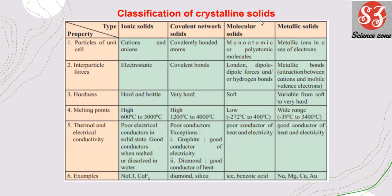Next is the classification of crystalline solids. Solids are of two types: crystalline and amorphous. The crystalline solids are classified into four types: first is ionic solid, second is covalent network solid, third is molecular solid, and fourth is metallic solid.